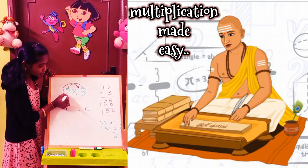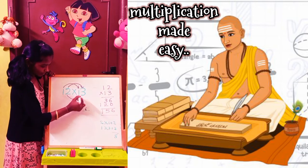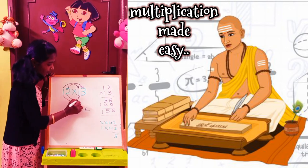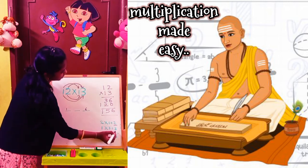we do 2 into 1 that gives 2. 1 into 3 that gives 3.